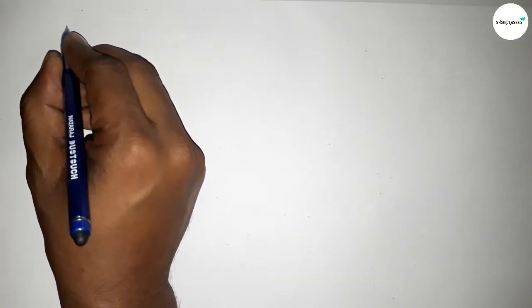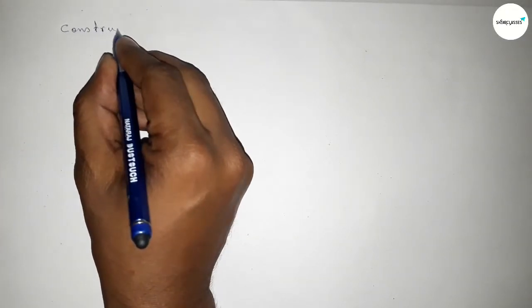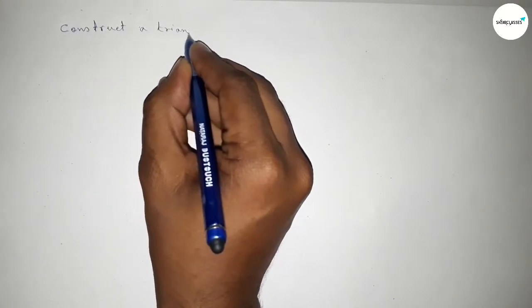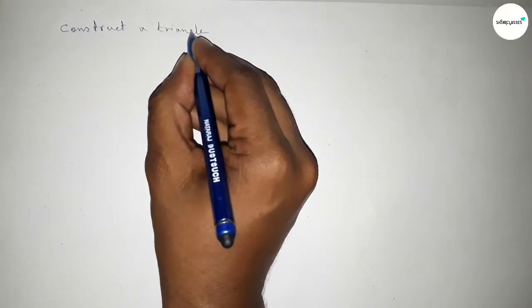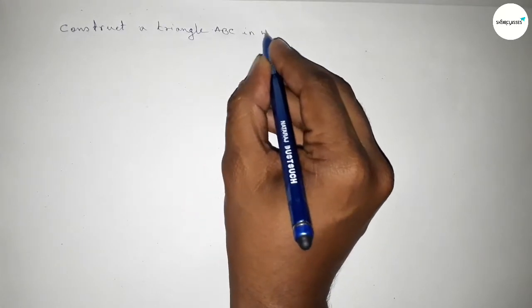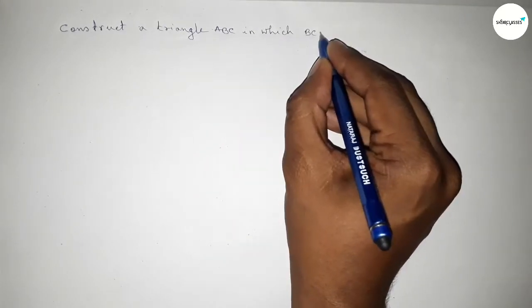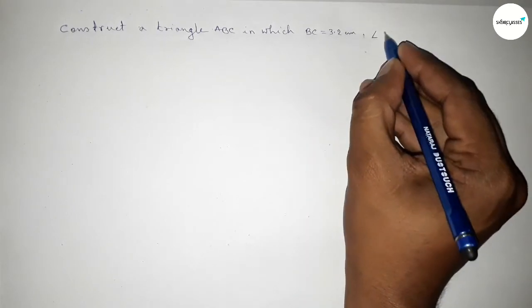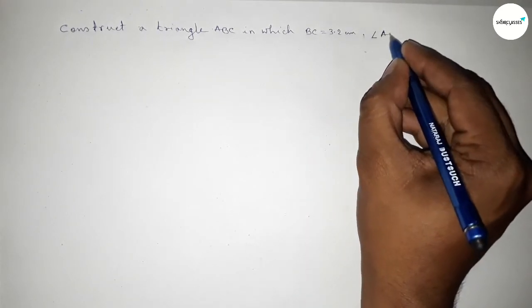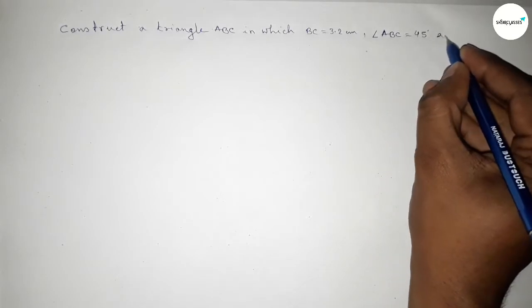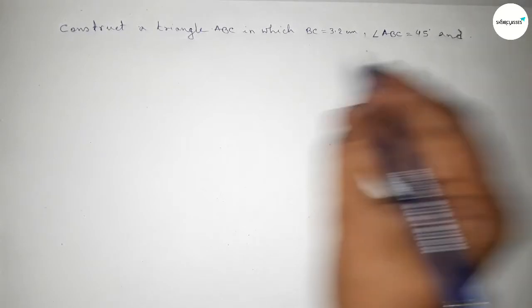Hi everyone, welcome to Si Share Classes. Today in this video we have to construct a triangle ABC in which BC equals 3.2 centimeters, angle ABC equals 45 degrees, and the perimeter of the triangle is 12 centimeters.